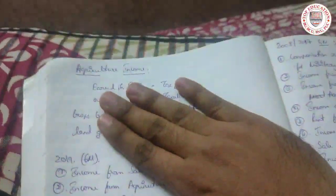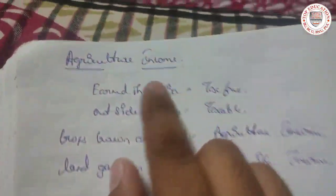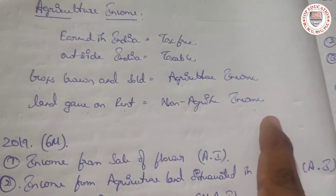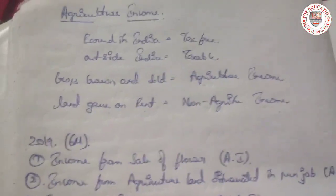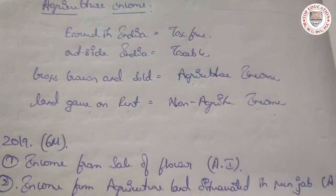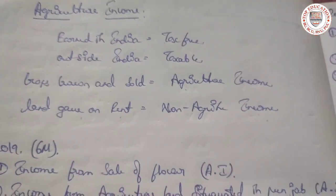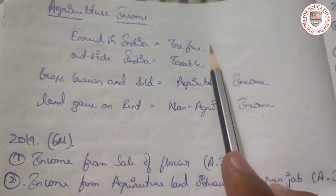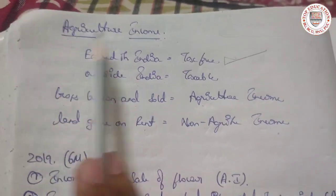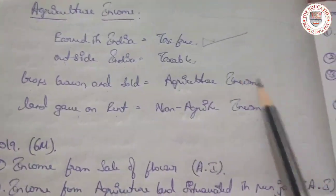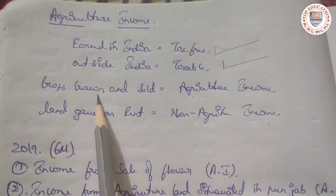If agriculture land is given on rent, that is not called agriculture income — it is non-agriculture income. To summarize: agriculture income earned in India is not taxable — it is tax free. Agriculture income earned outside India is taxable.